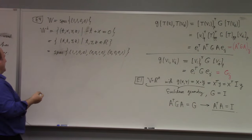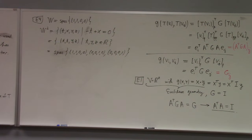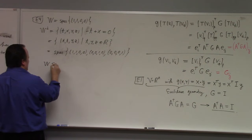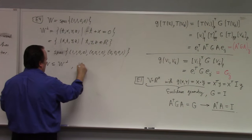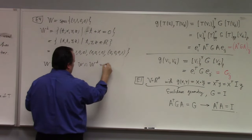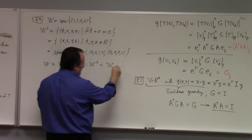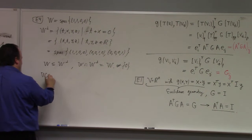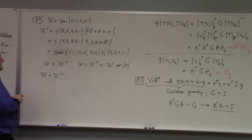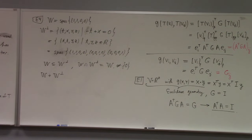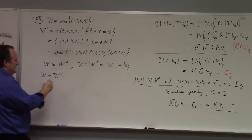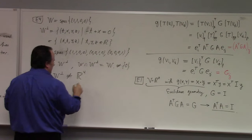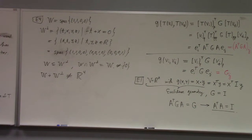Do you see something funny? W is a subset of W⊥. So W ∩ W⊥ is just W again, which is not equal to zero. And furthermore, W + W⊥ is not all of R^4.